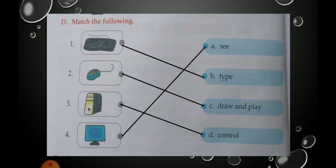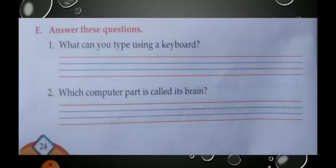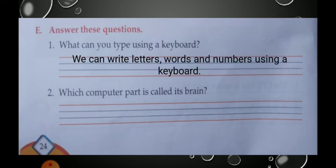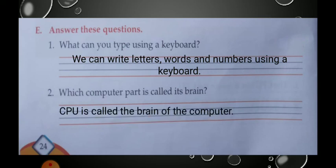Now we will turn to the next question. See Exercise E: Answer these questions. Two questions are given. First question: what can you type using a keyboard? We can type letters, words, and numbers using a keyboard. Second question: which computer part is called its brain? CPU is called the brain of the computer. Copy down these answers in your textbook.